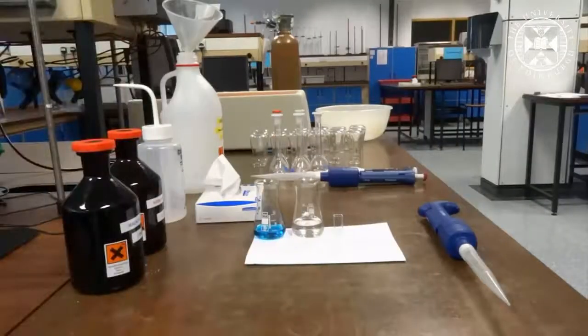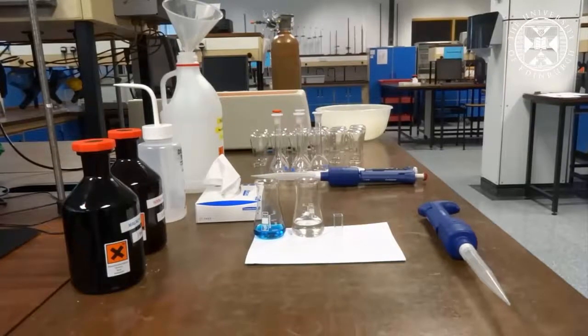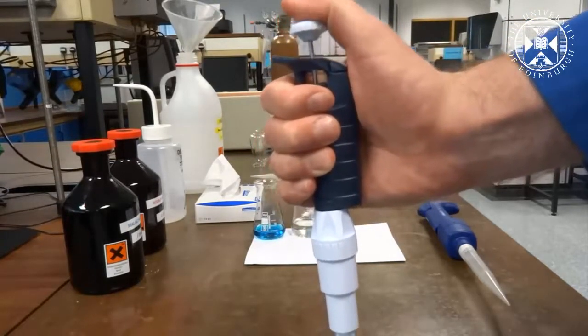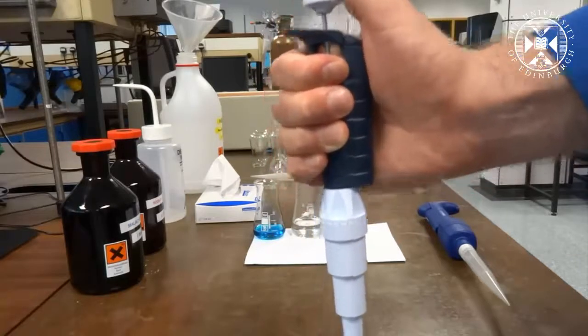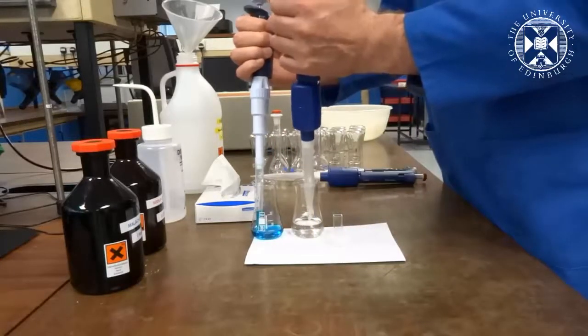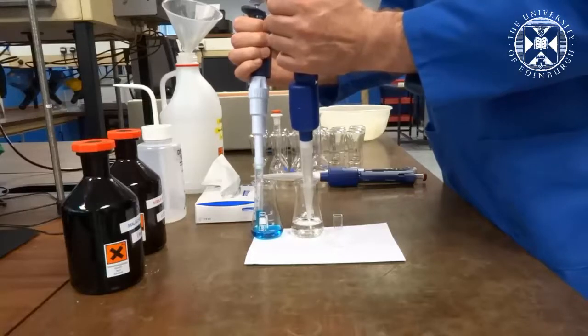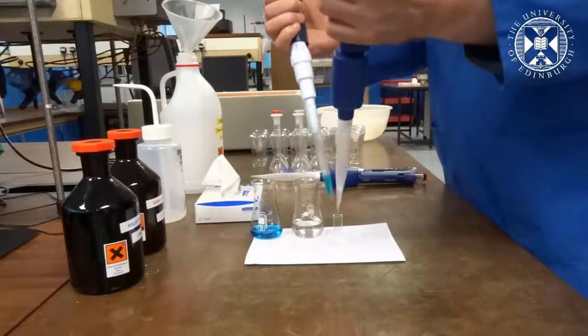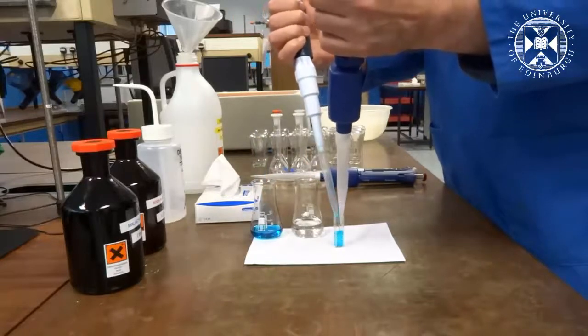To study the reaction we will add equal volumes of malachite green and hydroxide. This is easily achieved using pipettes. Remember with these pipettes that to draw in the liquid you push down to the point of first resistance. To eject you push firmly down all the way. Mix in the two reagents at the same time to ensure good mixing.